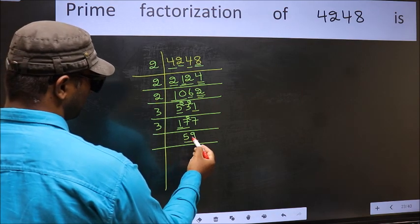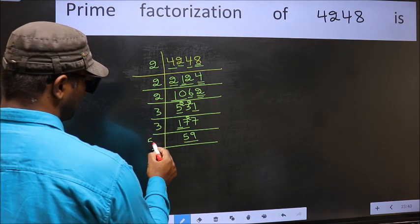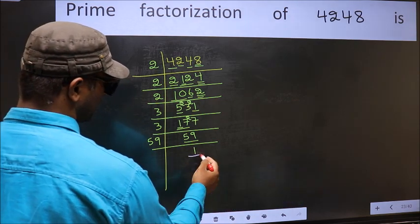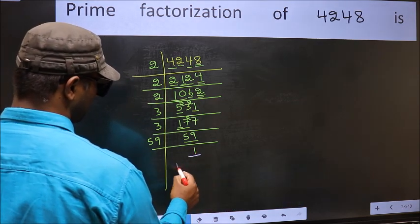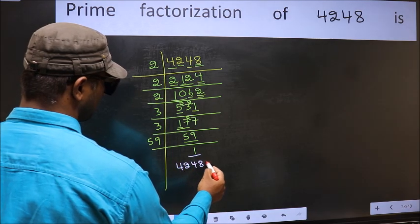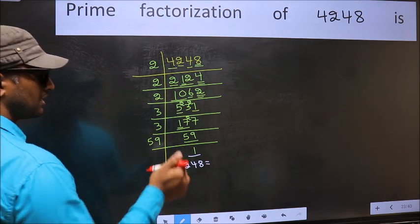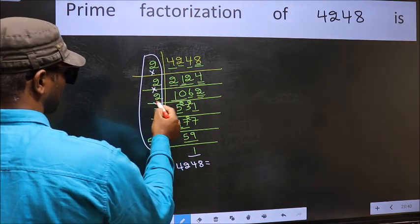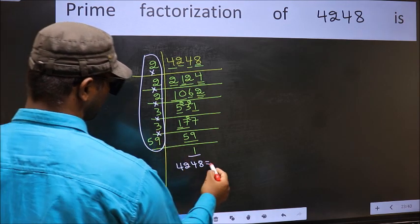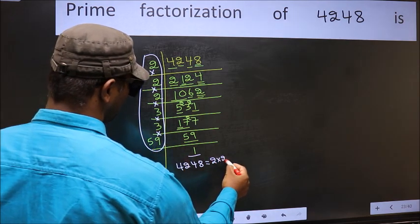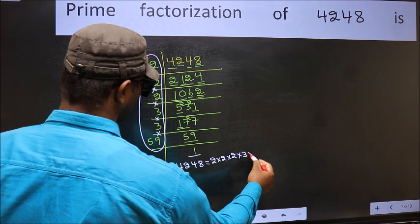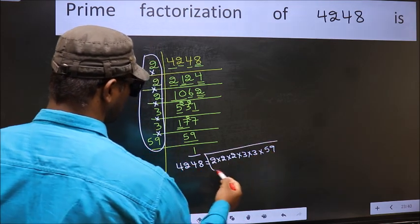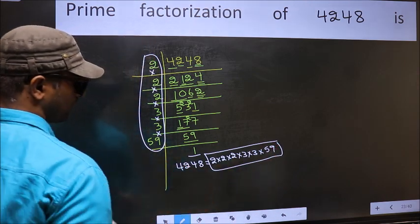Now, here we have 59. 59 is a prime number, so 59 once 59 — we get 1 here. So the prime factorization of 4248 is the product of these numbers: 2 × 2 × 2 × 2 × 3 × 3 × 3 × 59. This is the prime factorization of 4248.